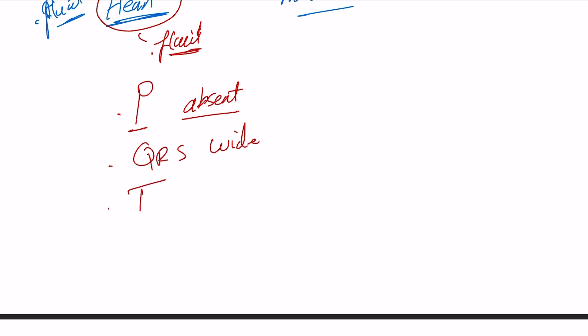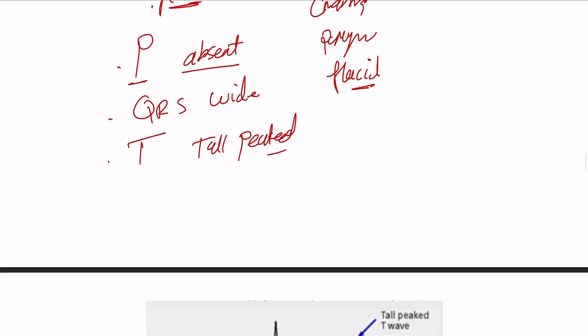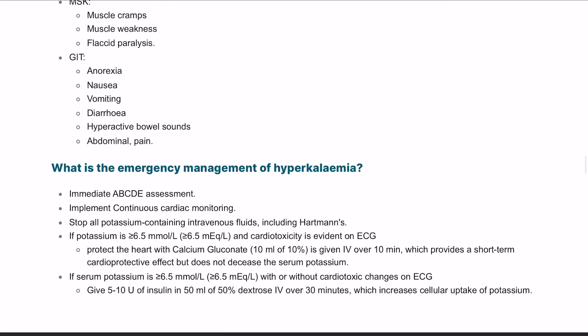...and the T wave will be tall and peaked. In the muscles it can lead to cramps, paralysis, and being flaccid. In the GI tract, hyperkalemia can lead to ileus, hyperactive bowel, abdominal pain, and diarrhea.